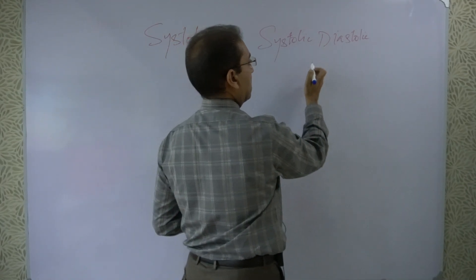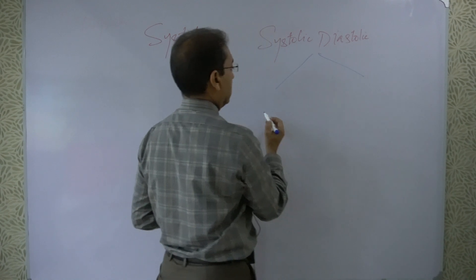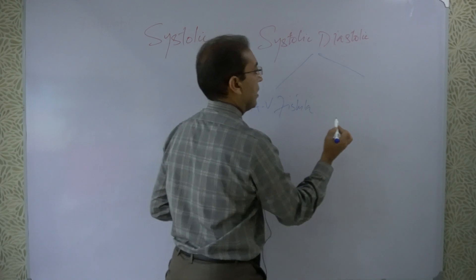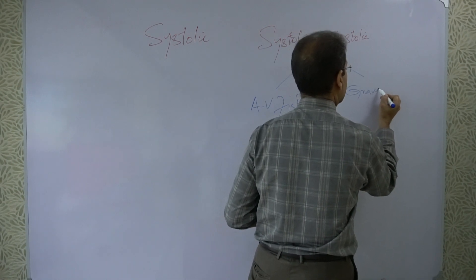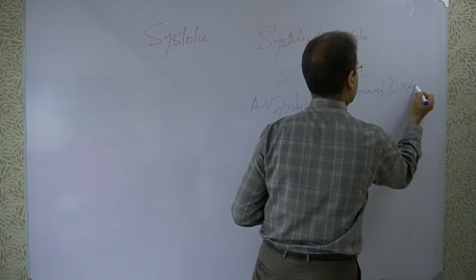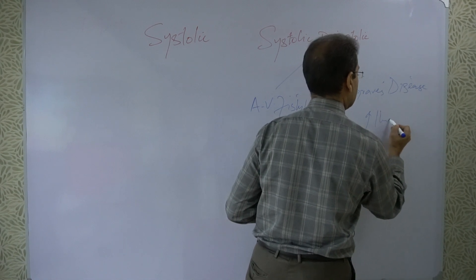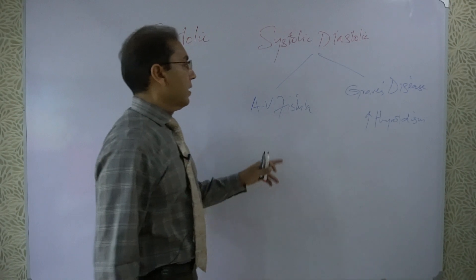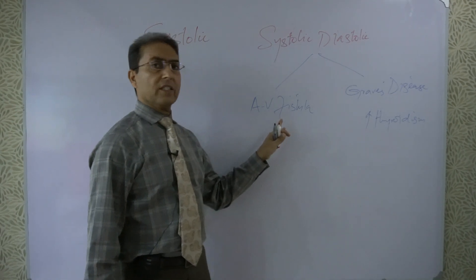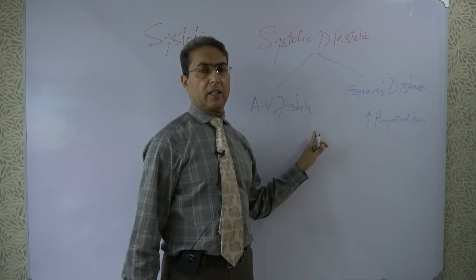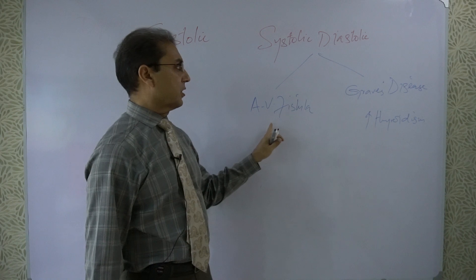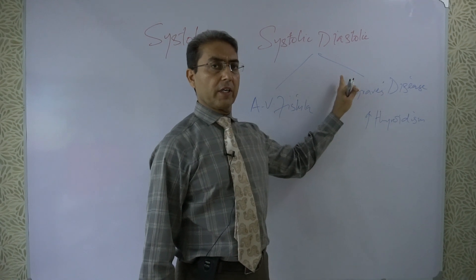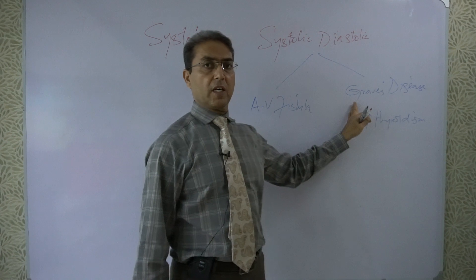If the bruit is systolic-diastolic, this is mainly due to two reasons: an AV fistula in the neck, or Graves disease — that is, hyperthyroidism. AV fistulas in the neck are uncommon and usually present inside the skull, but if surgery has been performed in the neck with inadvertent fistula formation, it may produce a systolic-diastolic sound. The most common cause of a continuous systolic-diastolic bruit is Graves disease.